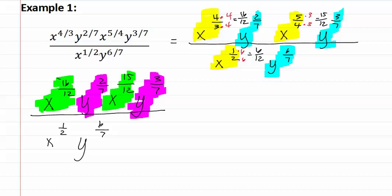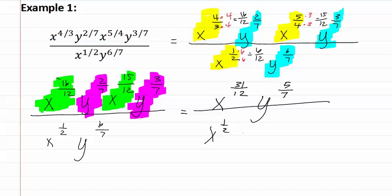Remember, if we have matching bases then we add the exponents. This means we get x to the sixteen plus fifteen-twelfths, which is thirty-one-twelfths. And y to the two plus three, which is five-sevenths — over x to the one-half, y to the six-sevenths. I just noticed that we did not correctly change one of our exponents, which should have been six-twelfths. It is always good to keep an eye on your work to make sure you haven't made mistakes.